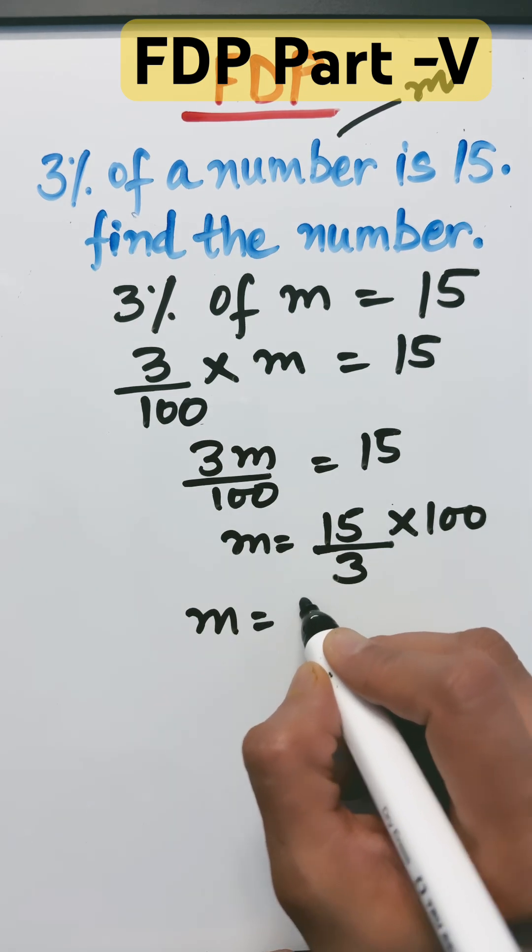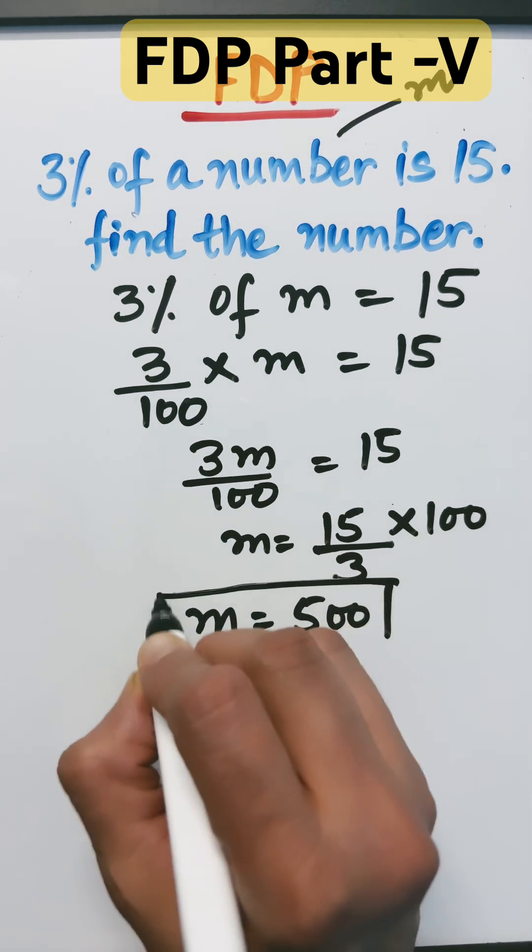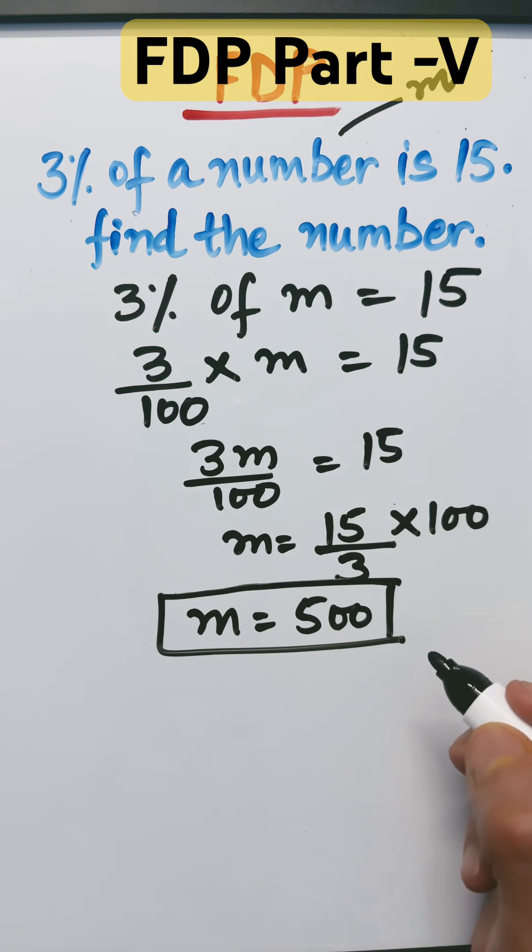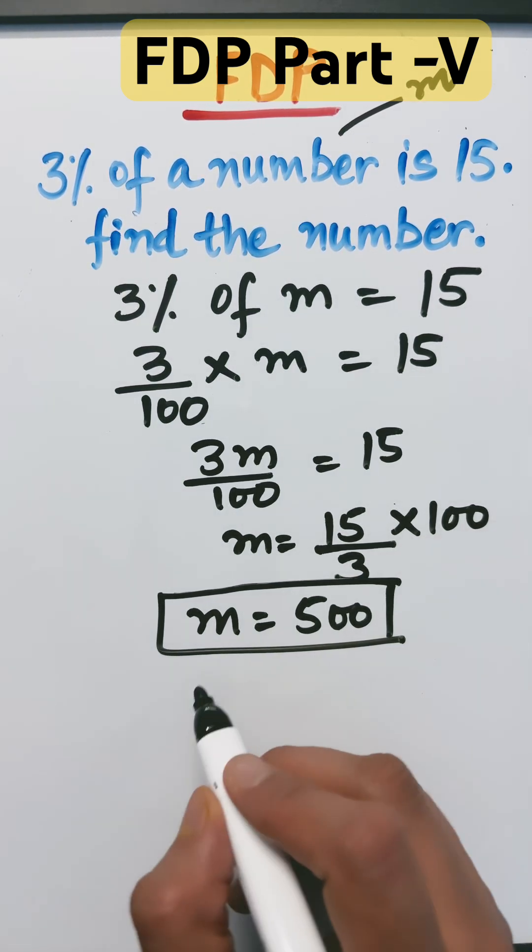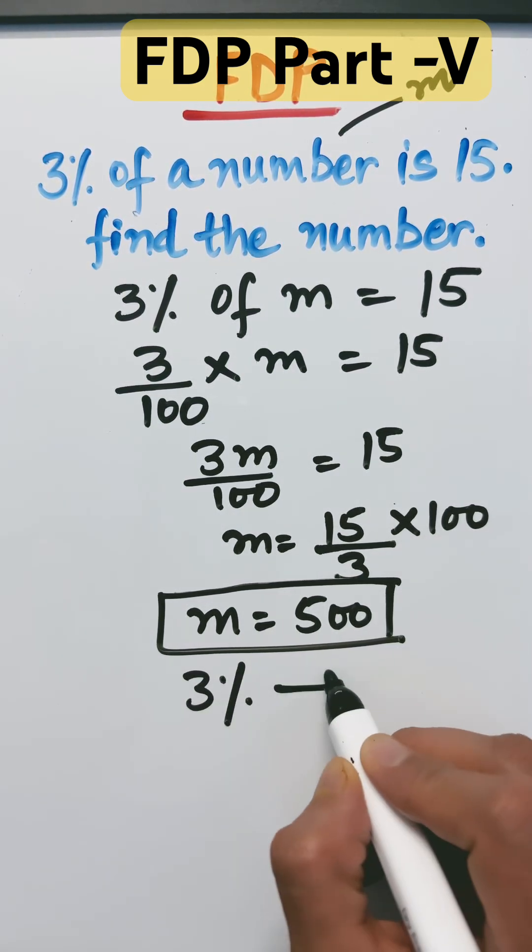So our total quantity is 500. That's the answer. Alternatively, I can do this in another way also. Like 3% is 15.